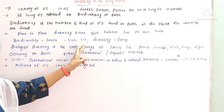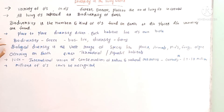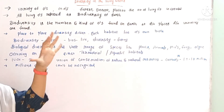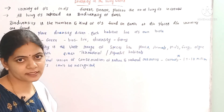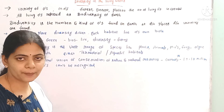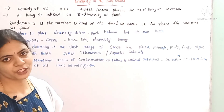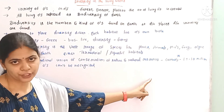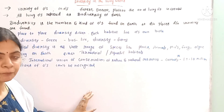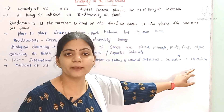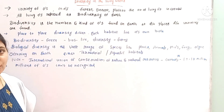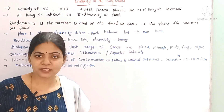The word biodiversity is derived from Greek — 'bios' means life and 'diversity' means forms. Biological diversity is the vast range of species including plants, animals, insects, microorganisms, fungi, and algae found on Earth, either in terrestrial or aquatic habitats. According to the IUCN — International Union of Conservation of Nature and Natural Resources — nearly 1.7 to 1.8 million living organisms have been recognized, but millions more are yet to be discovered.